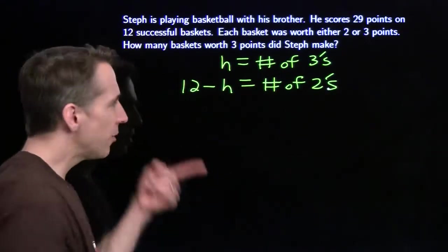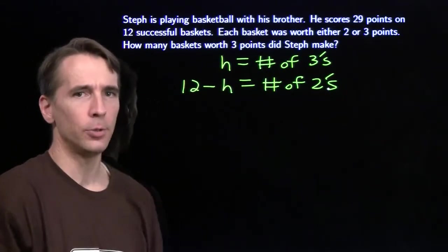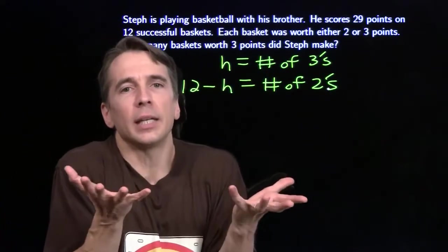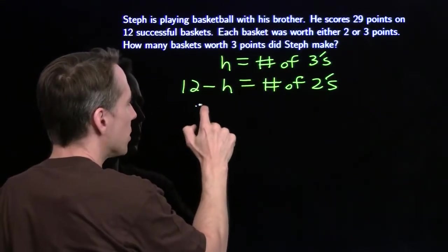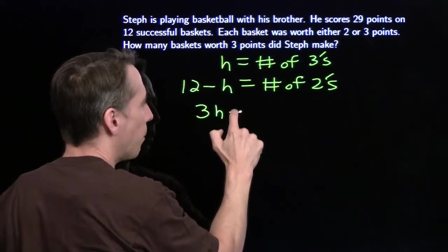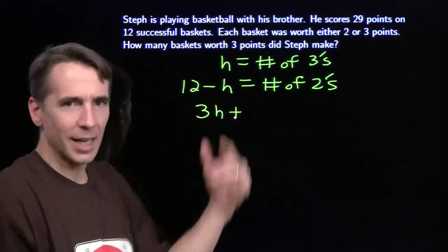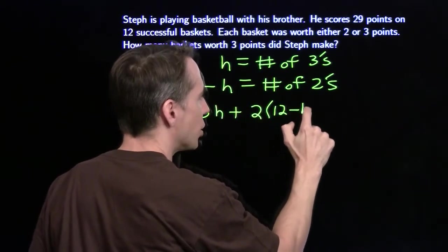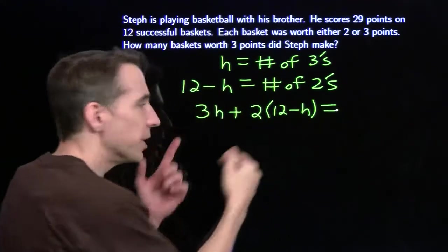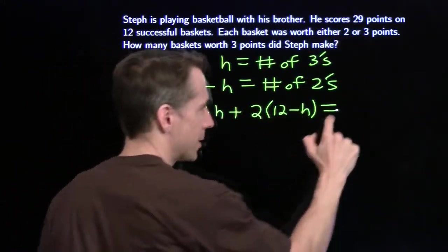So now we have an expression for the threes. We have an expression for the twos. We're going to put these together, make an expression for all the points. These h threes are worth 3h points. These 12 minus h twos are worth 2 times (12 minus h) points. If we put these together, it gives us a total of 29 points.